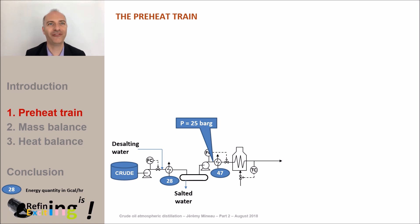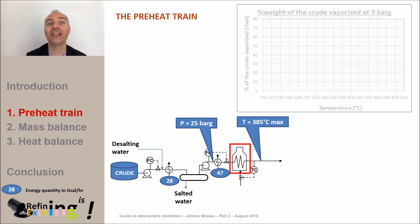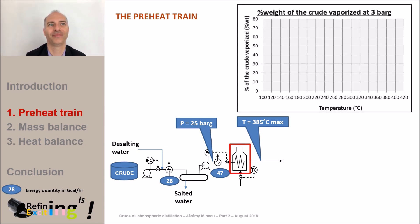After the flash in the valve the crude enters the furnace and vaporizes to reach a temperature of 385 degrees C maximum. At this temperature we will vaporize some molecules as we see on this graph. At 385 degrees C and at the pressure at the outlet of the furnace that is estimated at 3 bar G, we will vaporize about 70 percent of the crude.